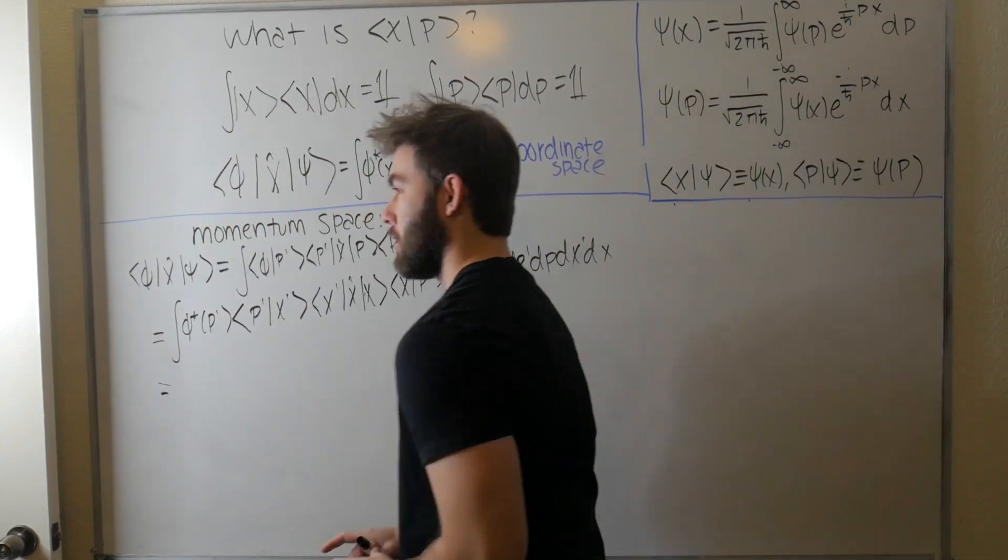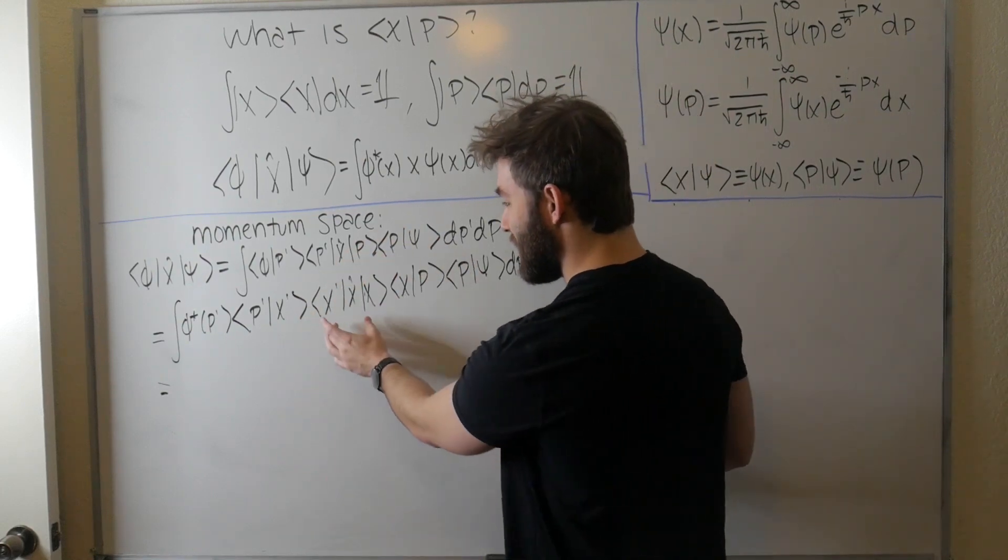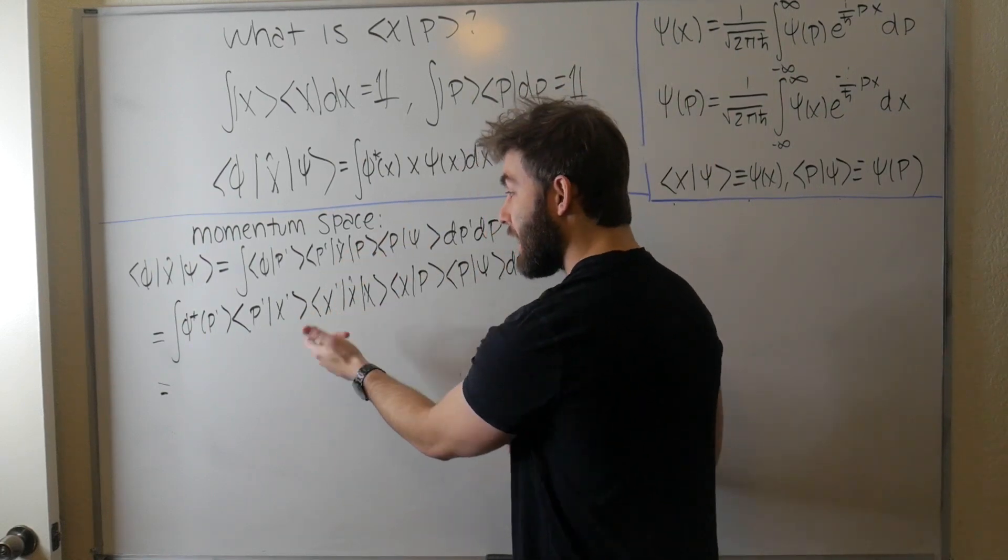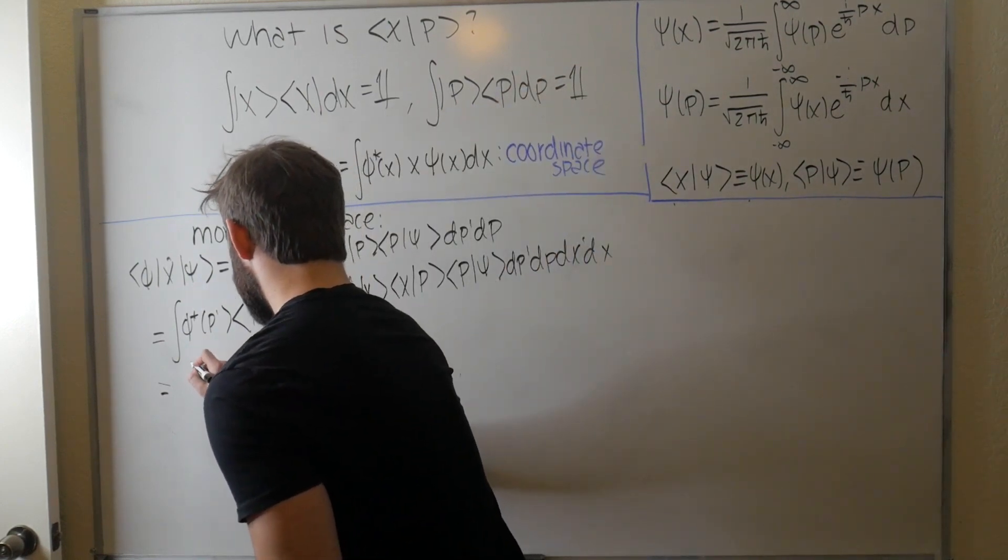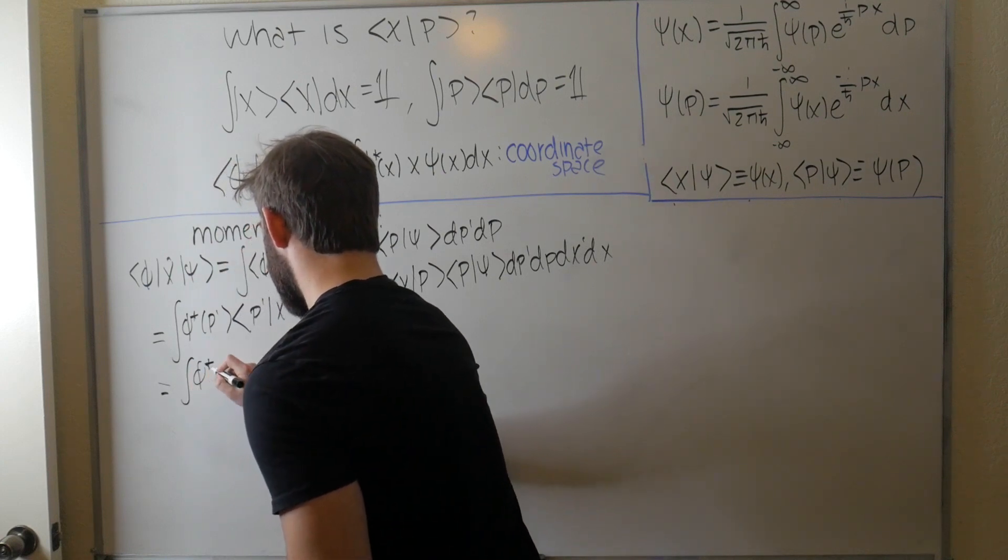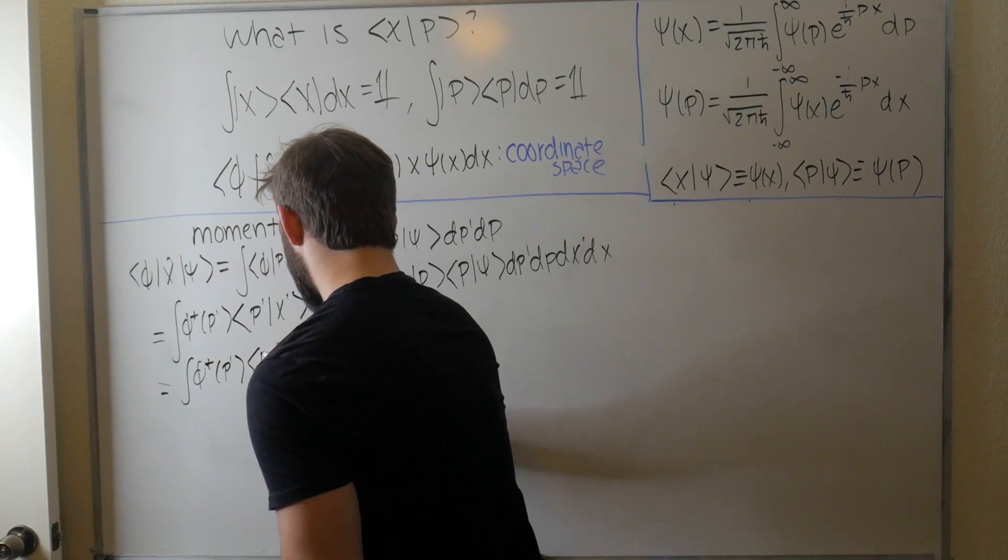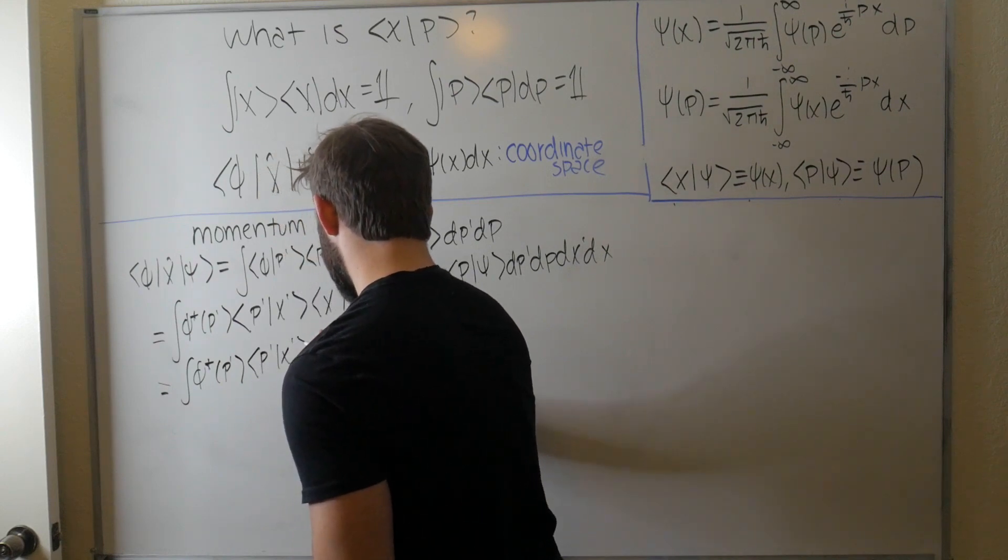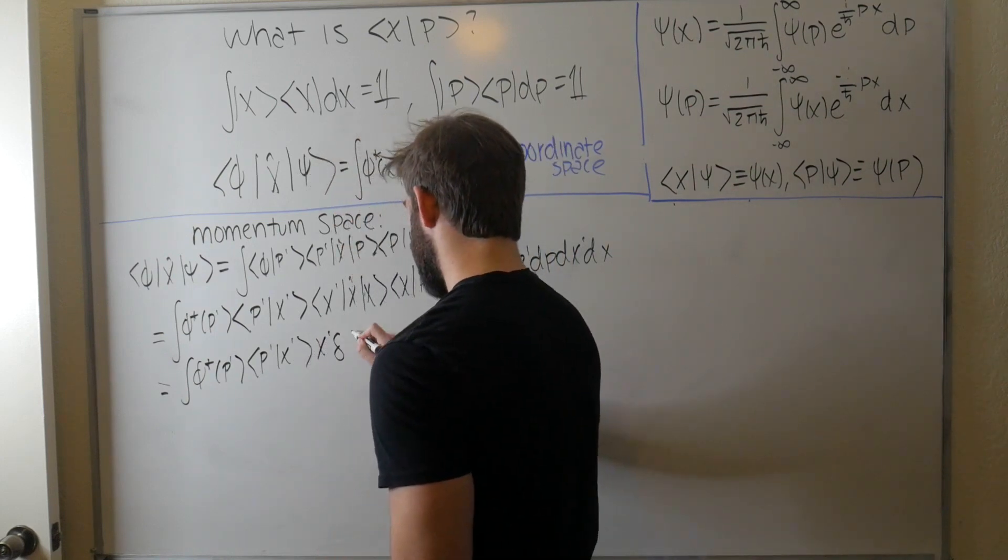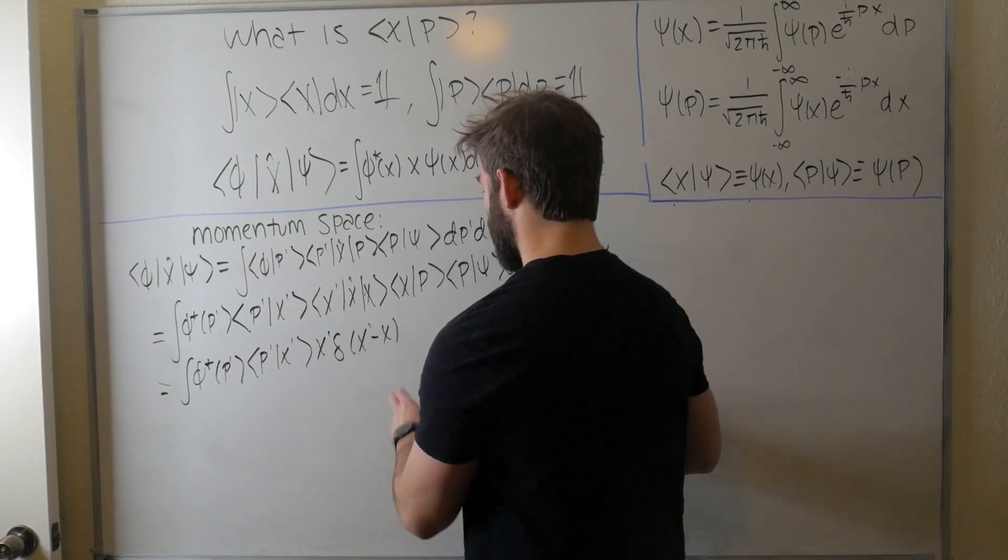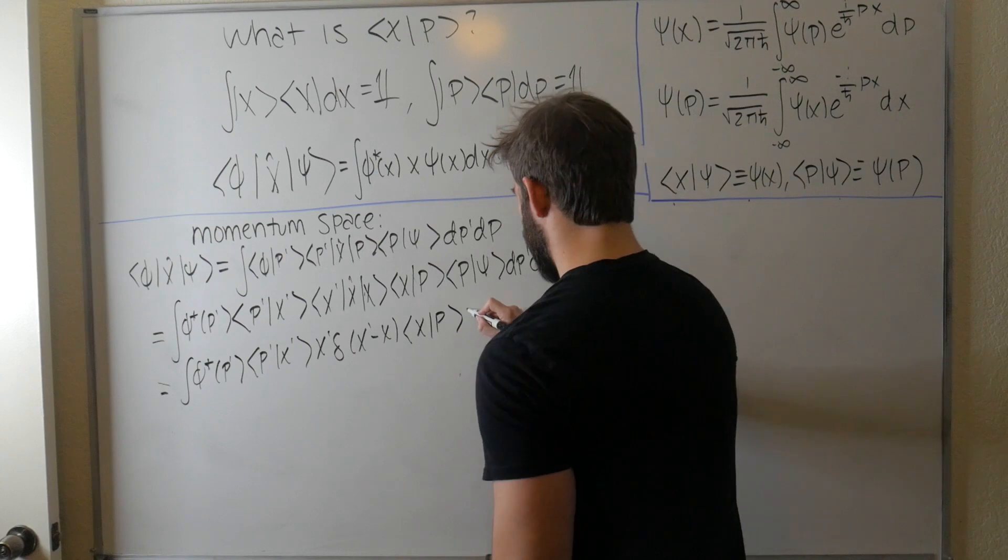And I'm also going to collect all of my terms that have p prime and have p on one side. Not to mention, this is just going to give us an x prime delta x minus, let me just write this out, because that's too much to just say. This is equal to the integral psi star p prime, whatever this is p prime x prime. This is going to give us an x prime delta x prime minus x, whatever this is x p and psi p.